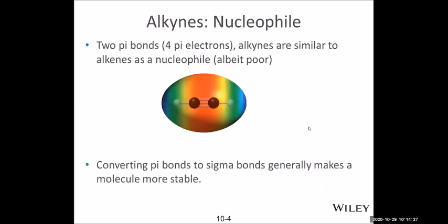Alkynes can be a nucleophile because they have four pi electrons. As we learned before, the pi electrons are relatively high energy and they are more available for reacting and forming bonds with other atoms. So the alkyne acts as a nucleophile.